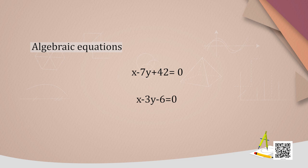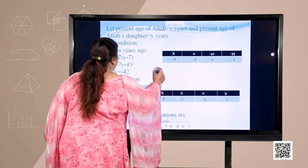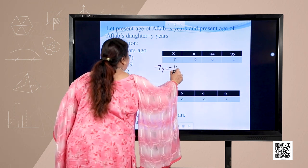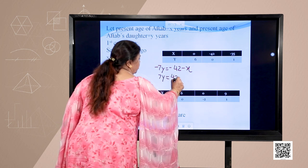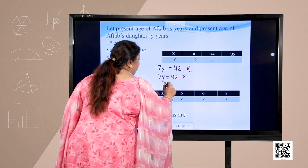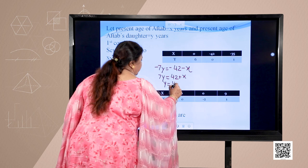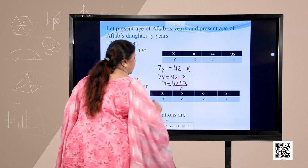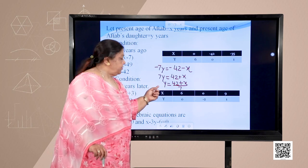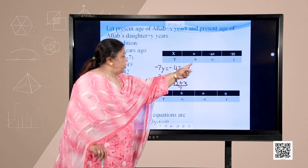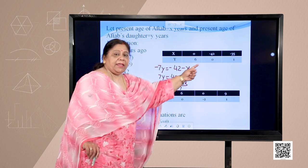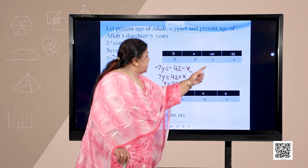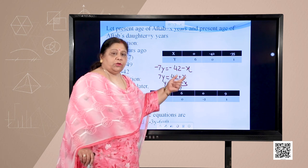We will now solve these two equations and get values in tabular form. For the first equation, X − 7Y + 42 = 0, we get Y = (42 + X) / 7. For various values of X: when X = 0, Y = 6; when X = −42, Y = 0; when X = −35, Y = 1. These values will be plotted on the graph.